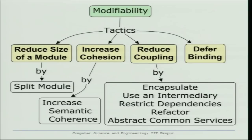What are the tactics for modifiability? They are classified into four groups: reduce the size of a module, increase cohesion, reduce coupling, and defer binding time. This last one is a very interesting tactic, and we will go through each one of them.